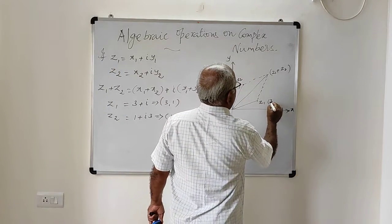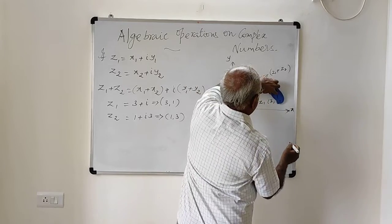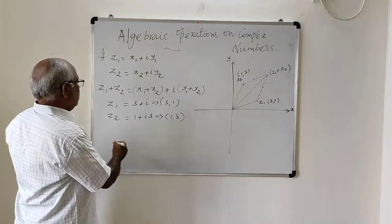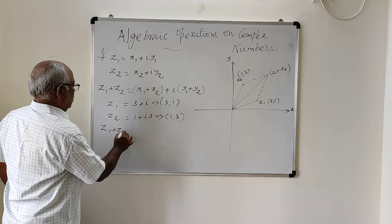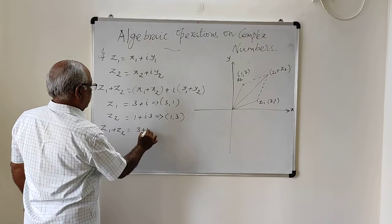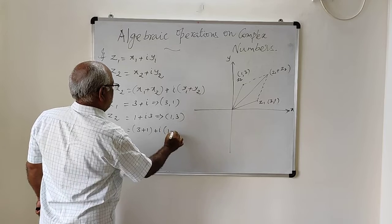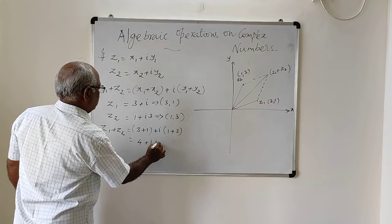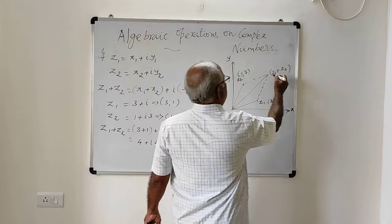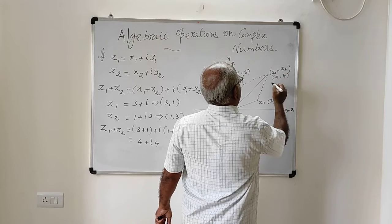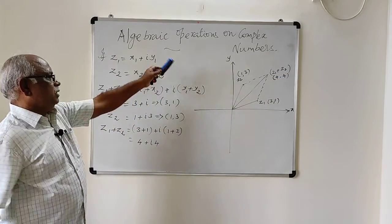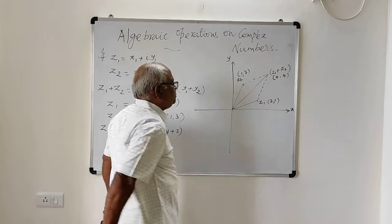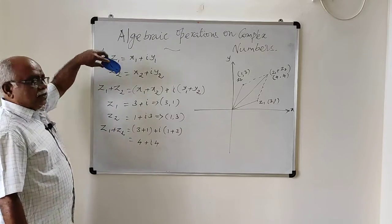For example, if z1 is 3 plus i1 (that is, the point (3, 1)) and z2 is 1 plus i3 (the point (1, 3)), then z1 plus z2 equals (3 plus 1) plus i(1 plus 3), which is 4 plus i4 — the point (4, 4). Like that, the sum of two complex numbers is defined.